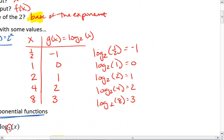The reason we see all these log base 2 of 1 half equals negative 1 is because, again, 2 to negative 1 is 1 half. Then we have 2 to the 0, which is 1. 2 to the 1, which is 2. 2 to the 2, which is 4. And 2 to the 3, which is 8. So the base of the log is also the base of our exponent.